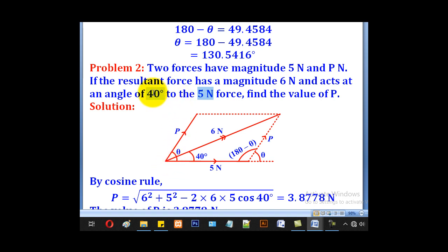But they said the resultant has an angle of 40. So what we shall do is first complete our parallelogram by reproducing this P here. Then this angle will be the angle the resultant makes with 5 newton force which is 40 as it was given in the question.